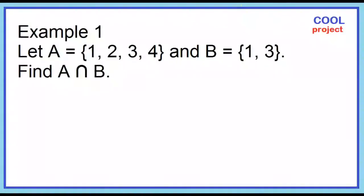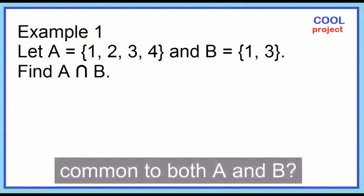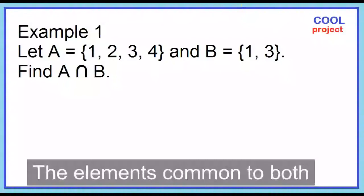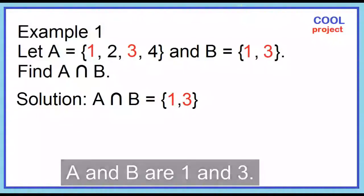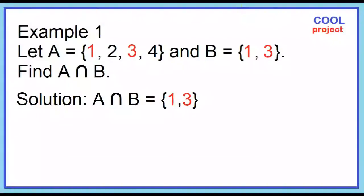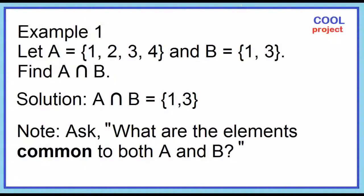Example number 1: Given set A and set B, find A intersection B. What are the elements common to both A and B? The elements common to both A and B are 1 and 3. To find the elements of A intersection B, ask: What are the elements common to both A and B?